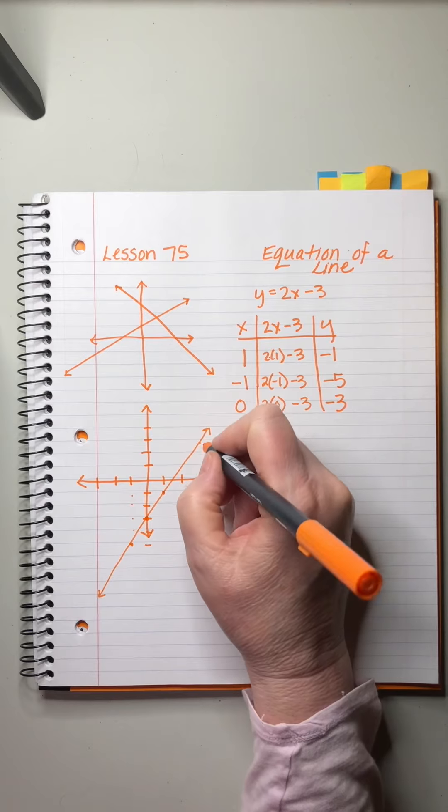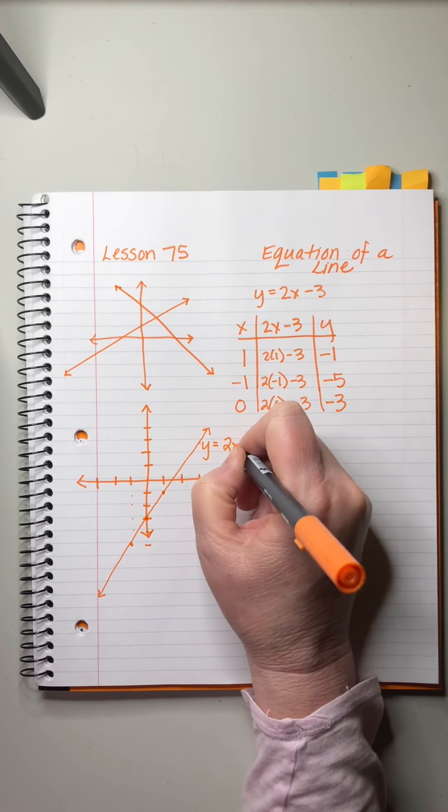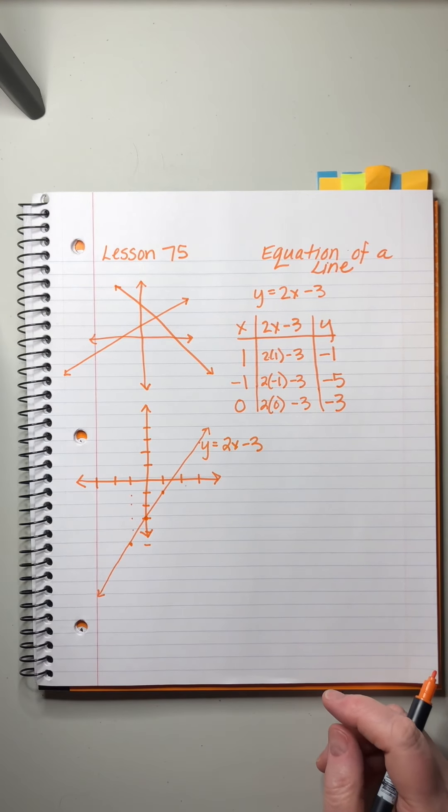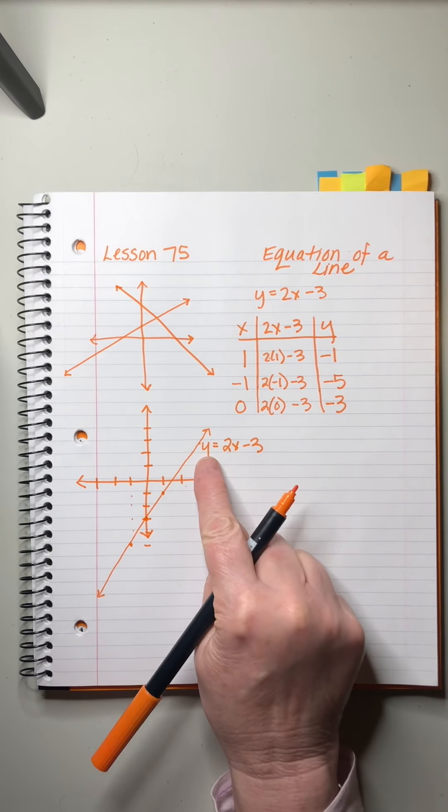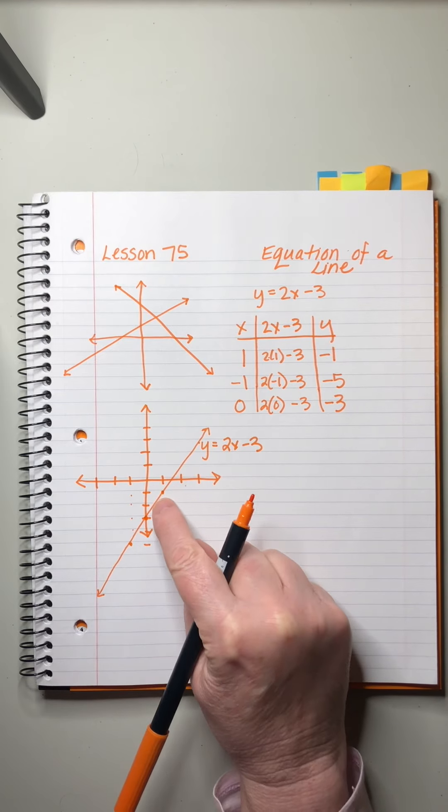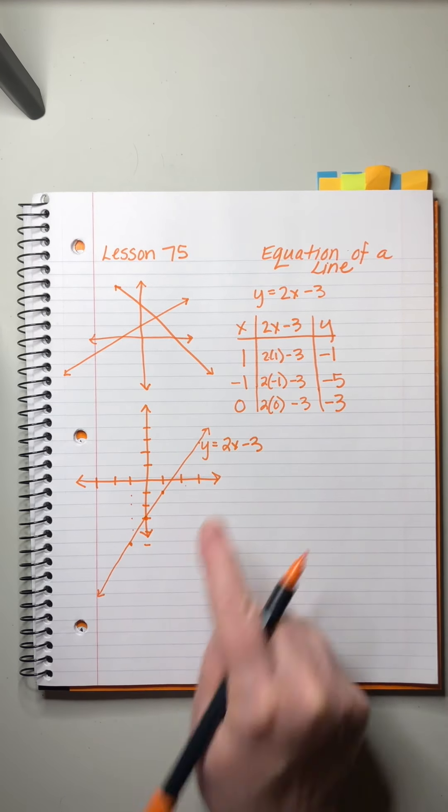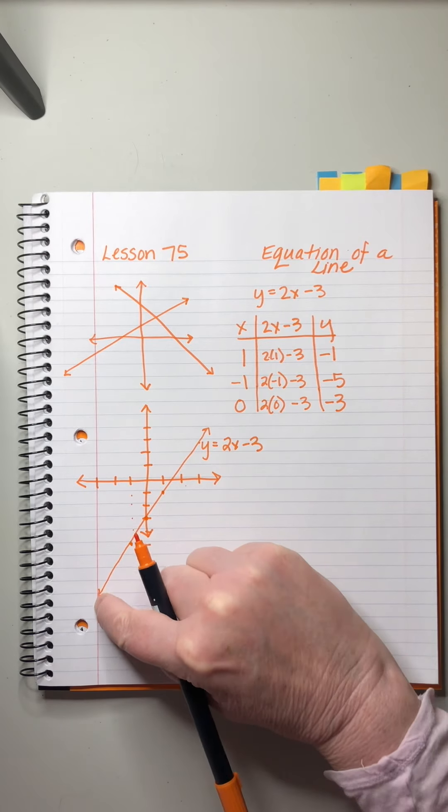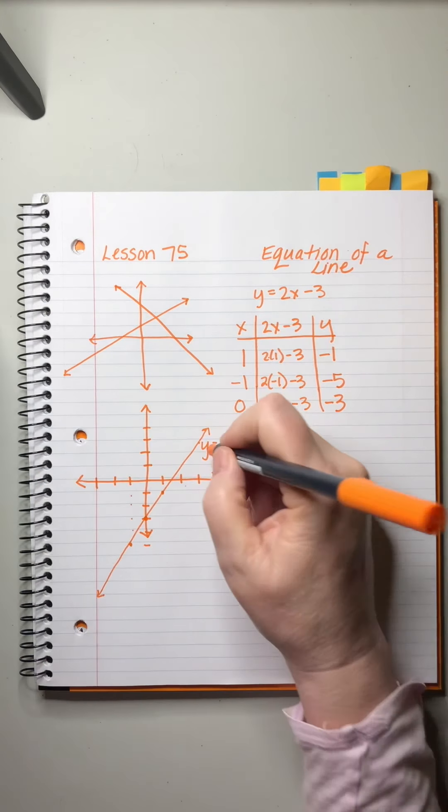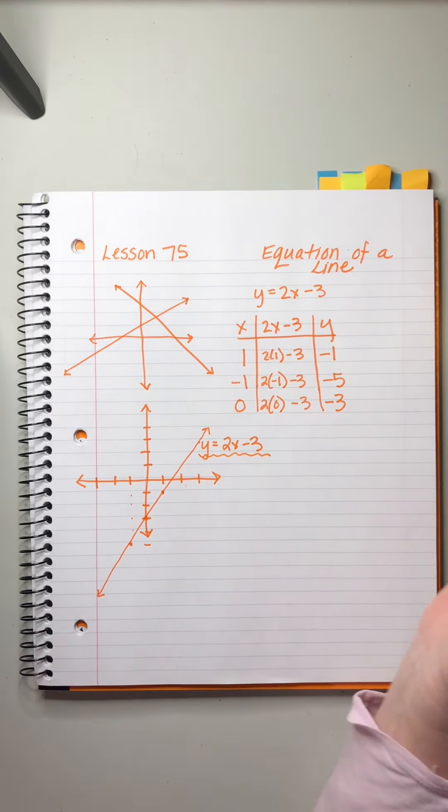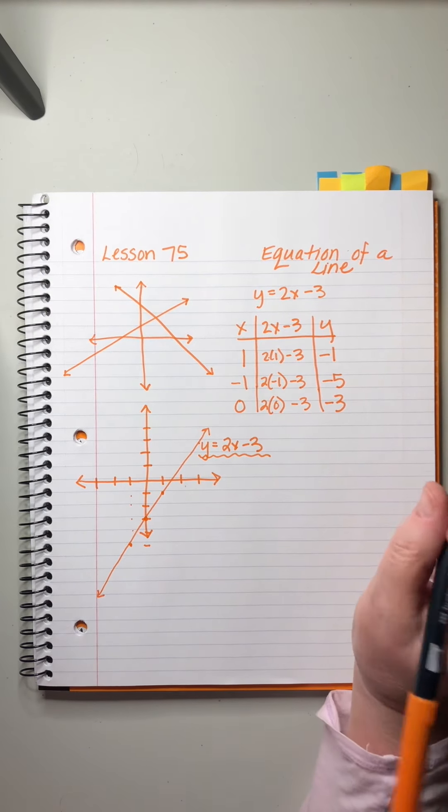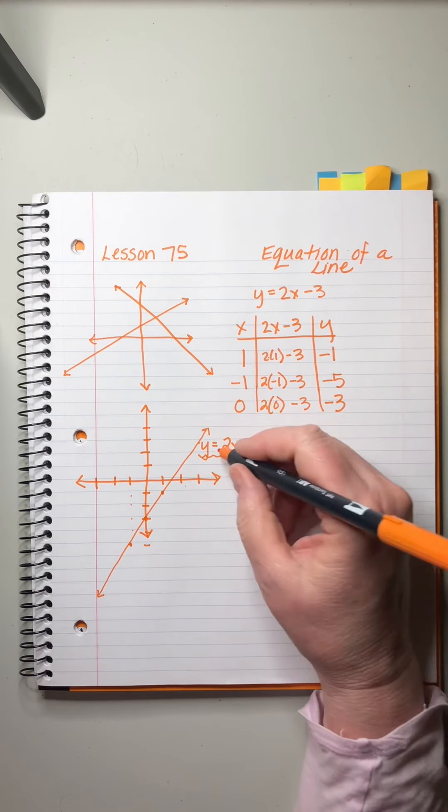And then we say that the name of this line is y equals 2x minus 3. And every single pair of points on this line, not only the whole numbers, but the fractions and the decimals. Every x value will calculate out to have a y and that x and y will be on this line. So all the different values for x and y that you can imagine make up this line. Now, what we want to do is we want to focus on the way that this equation is written. And we want to learn how to graph without having to do this dumb table. I'm not a fan of the tables.